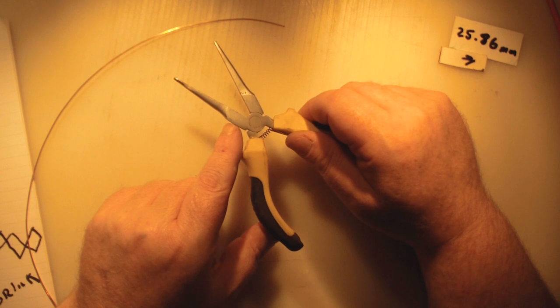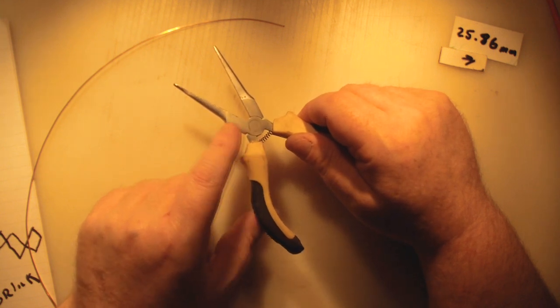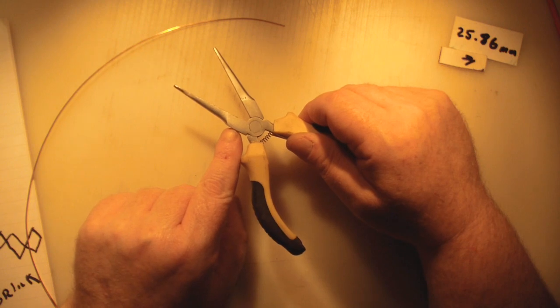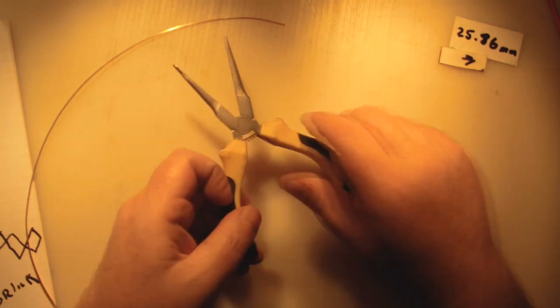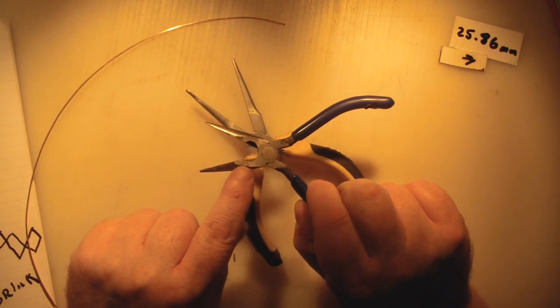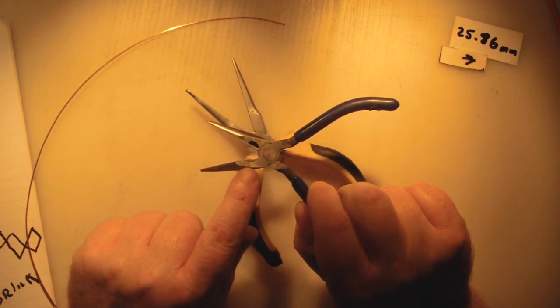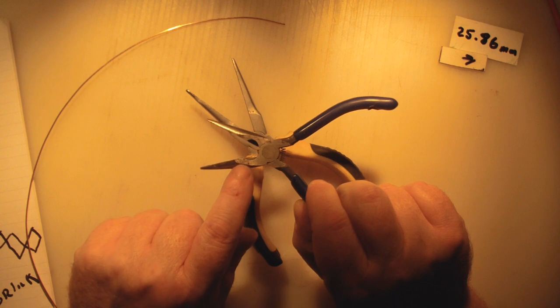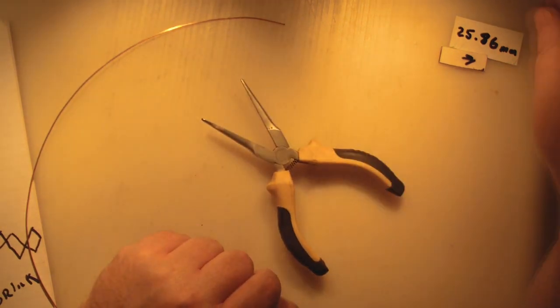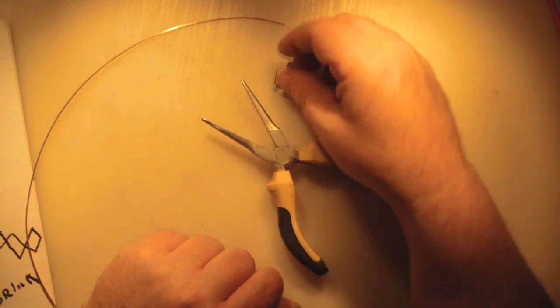To construct the element, you're going to want some needle nose pliers. Try and find some like this that have a large flat surface that you can bend onto to get your right angle bends, as opposed to these - they only have a really small flat surface here. It's really a pain making it with a pair like these.